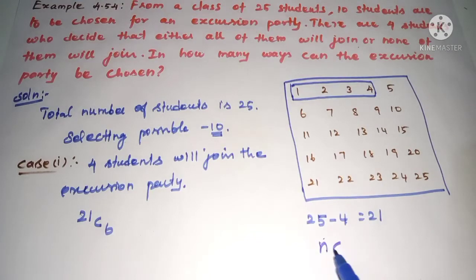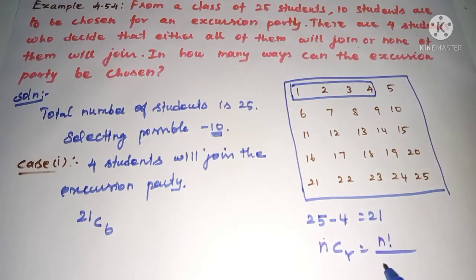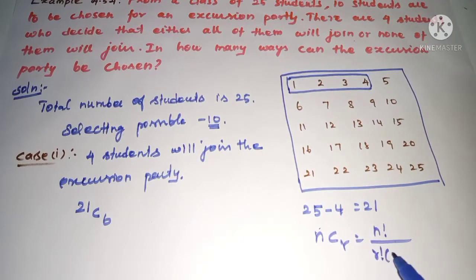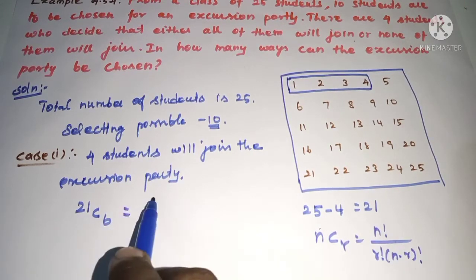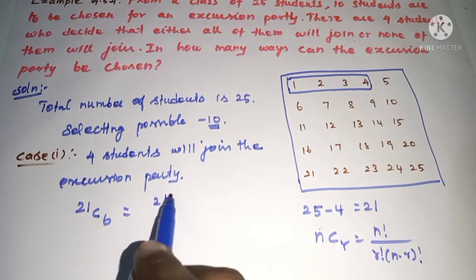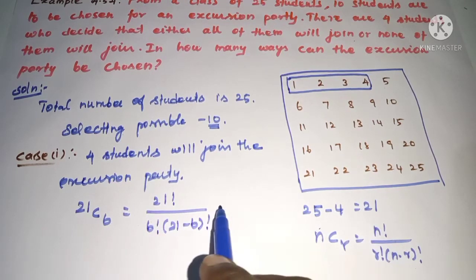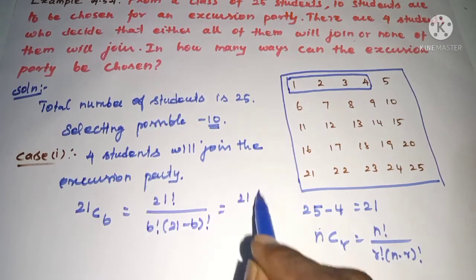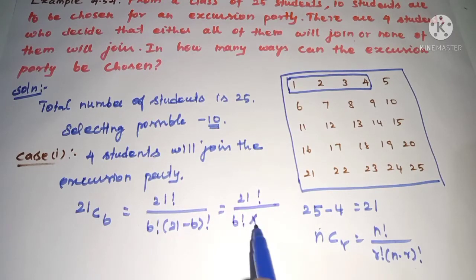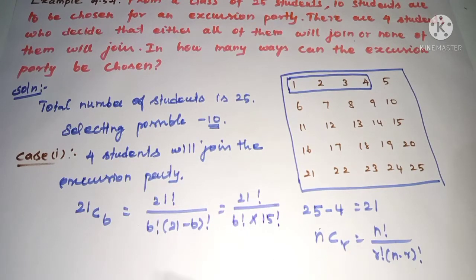We know NCR is equal to N factorial divided by R factorial into (N minus R) factorial. So for Case 1, since all 4 join, we need to choose the remaining 6 from the other 21 students: 21 factorial divided by 6 factorial into (21 minus 6) factorial, which gives 21 factorial divided by 6 factorial into 15 factorial.